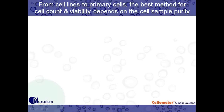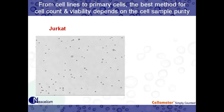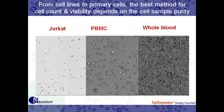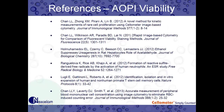From cell lines to primary cells, the message of this webinar is: the best viability method depends on your sample purity. For immortalized cell lines, both AOPI and Trypan Blue will work great. Moving further toward primary samples, we see PBMCs — you can see the biconcave morphology of red blood cells and some PBMCs, but we don't know until we've stained for DNA. For whole blood, the protocol is a little different than mixing one-to-one, but still very simple. The best viability method for you depends on your sample purity.